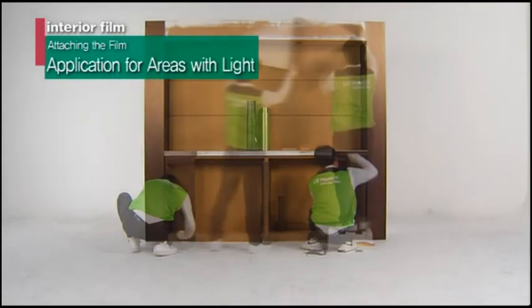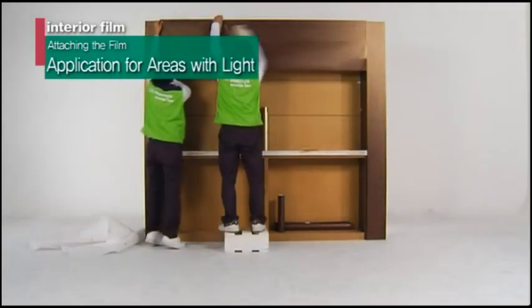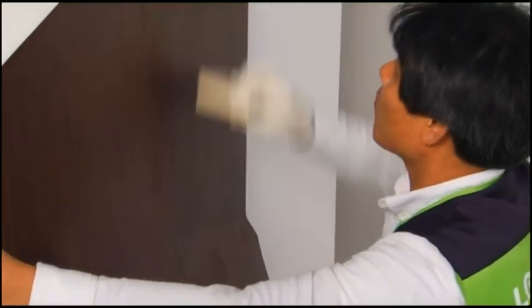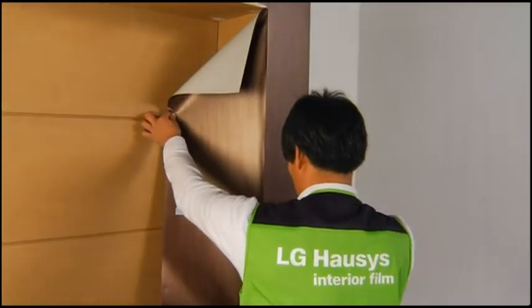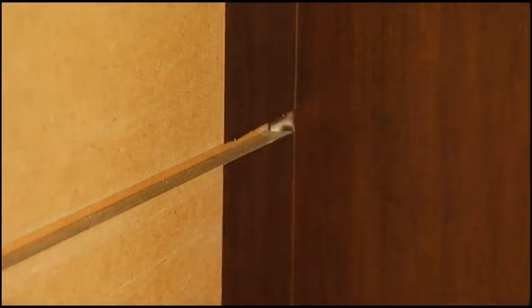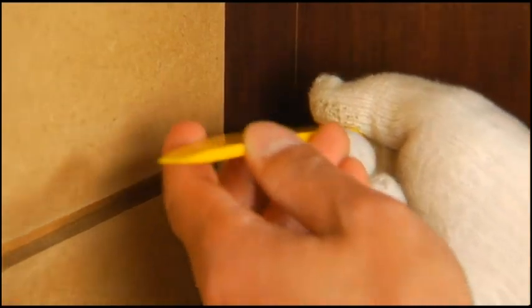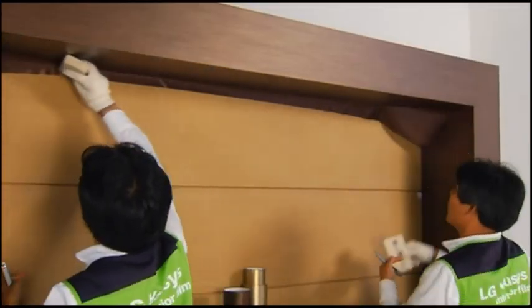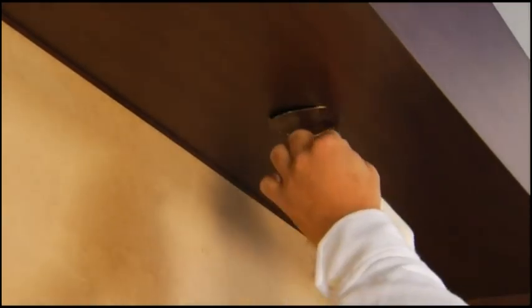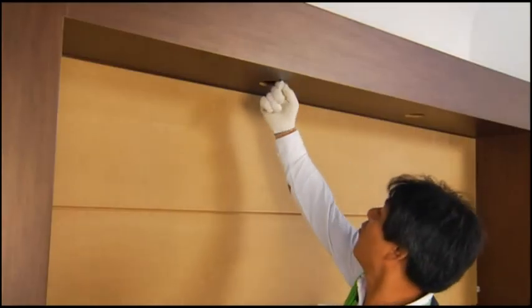This is the procedure for attaching film to structures with lights. First, carefully attach the film using the general method to the entire surface. It is most efficient to cover the entire area with lights all at once. You can shape the film around the area with lights using your fingers, cut the excess, and reassemble the lights and accessories to finish it off.